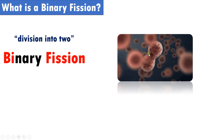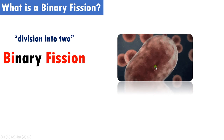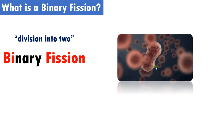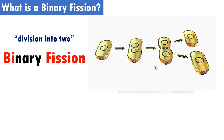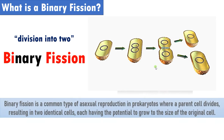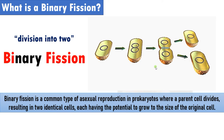As you see in this video, a cell enlarges and splits, grows and separates to form two identical cells. Binary fission is a common type of asexual reproduction in prokaryotes like bacteria, where a parent cell divides to form two identical daughter cells, and each cell is capable of growing to the size of the parent cell.